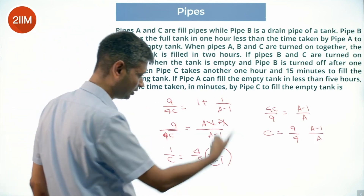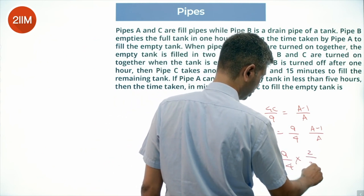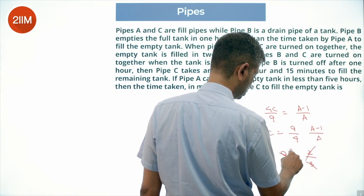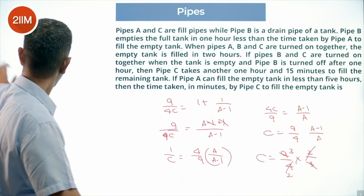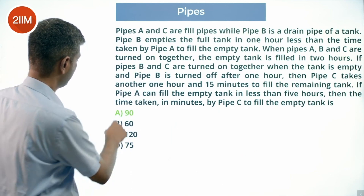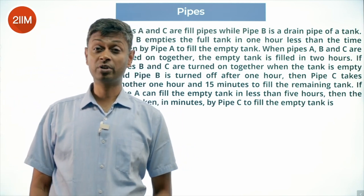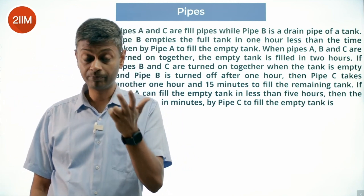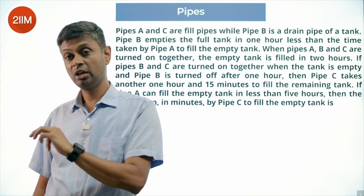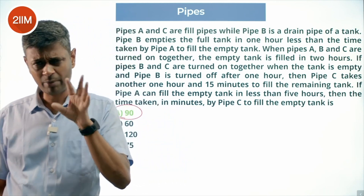With A equal to 3, we use C equals (9/4) times (A-1)/A equals (9/4) times (2/3) equals 3/2 hours, which is 1.5 hours or 90 minutes. This is the answer. It's an elaborate question — we set up two equations in A and C, expressed C in terms of A, substituted back, solved the quadratic, applied the constraint, and found C. Not an easy problem.